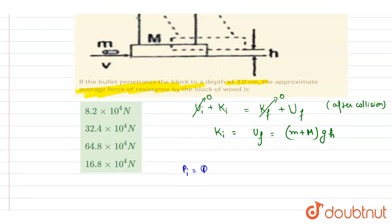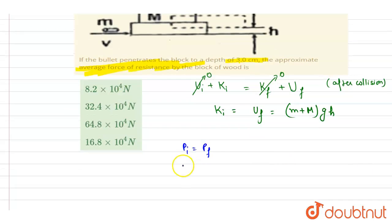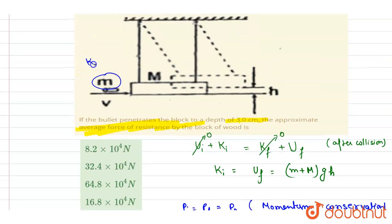Now we will apply momentum conservation for the collision, for the first collision. Initial momentum will equal the final momentum. The momentum is equal, so I will write down the kinetic energy. Let's say before the collision, this bullet was having the kinetic energy K naught. Initial kinetic energy that this bullet was having was K naught.